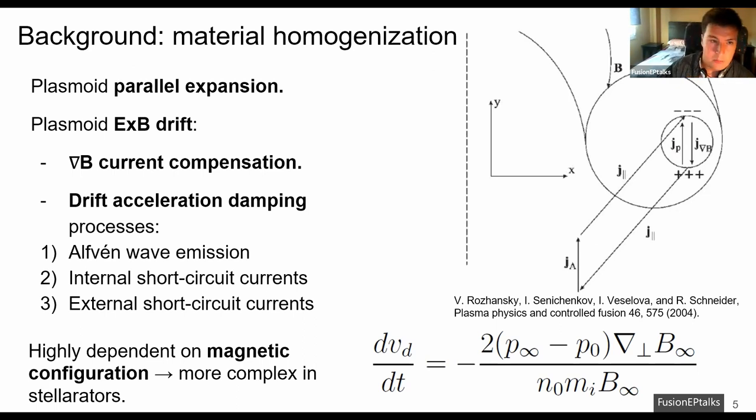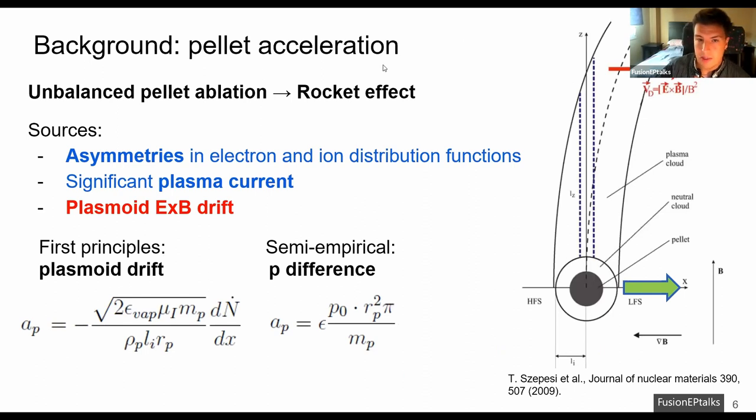In addition, pellets have been observed to be deflected in the radial, toroidal, and poloidal directions and this is believed to be caused by an unbalanced pellet ablation between both sides of the pellet that leads to acceleration via rocket effect in the direction opposite to the overablation. Some possible sources of this unbalanced ablation are the asymmetries in the electron and ion distribution functions and significant plasma currents. And it is also believed that the plasmoid cross-B drift itself could cause this unbalanced ablation.